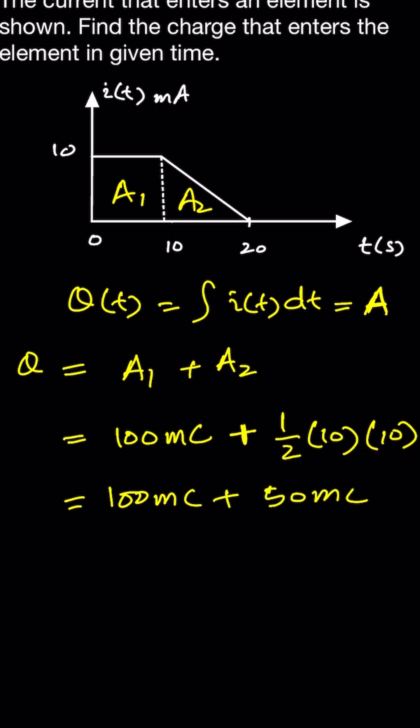So 50 millicoulombs, or we can say that 150 millicoulombs, or we can say 150 into 10 to the power minus 3 coulombs. Or we can say that 0.150 coulomb.